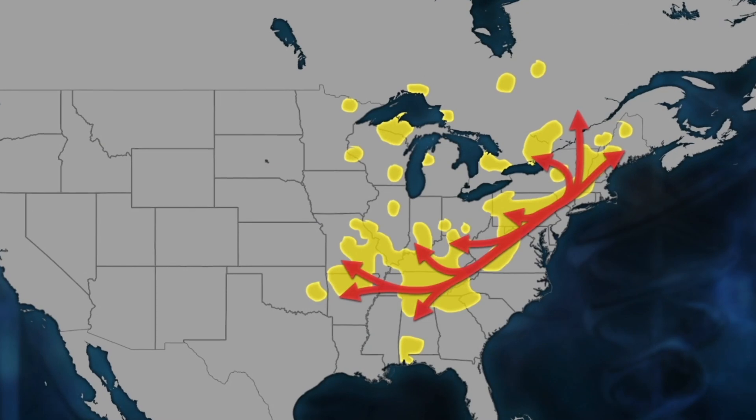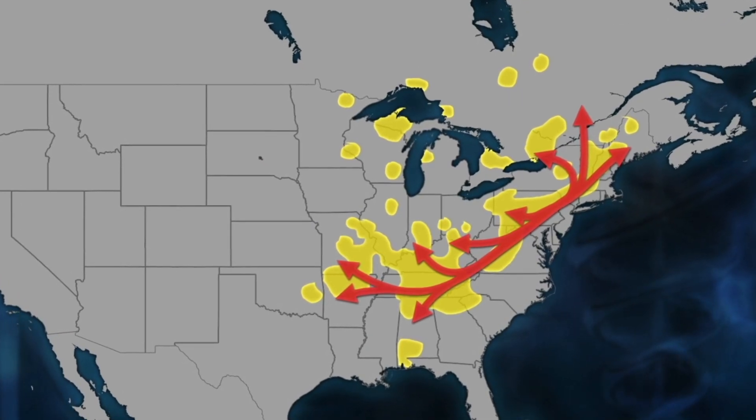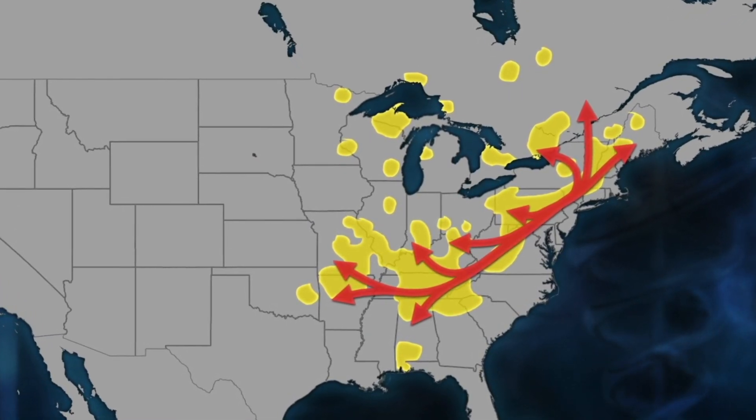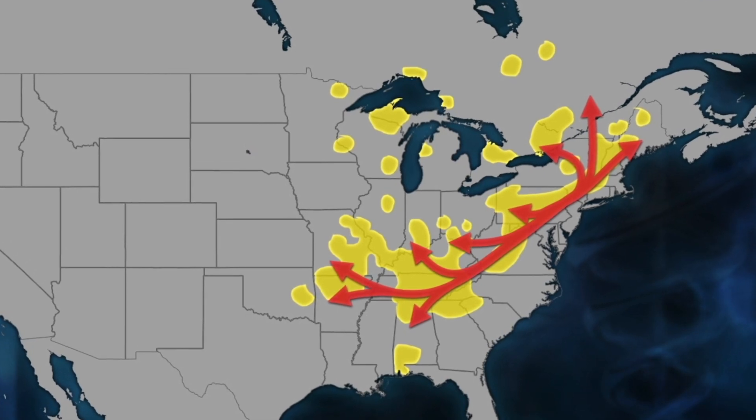It is estimated that there has been a loss of almost 80% of the bat population in the northeastern United States since white-nose syndrome appeared. This sudden and widespread mortality is unprecedented, and in spite of efforts to contain the disease, it unfortunately continues to spread without a cure in sight.